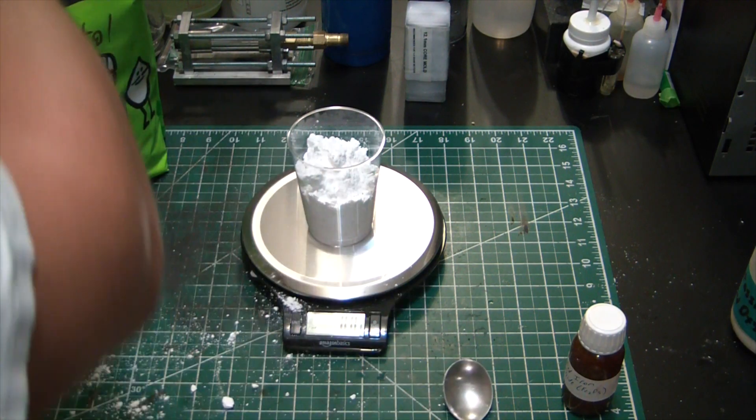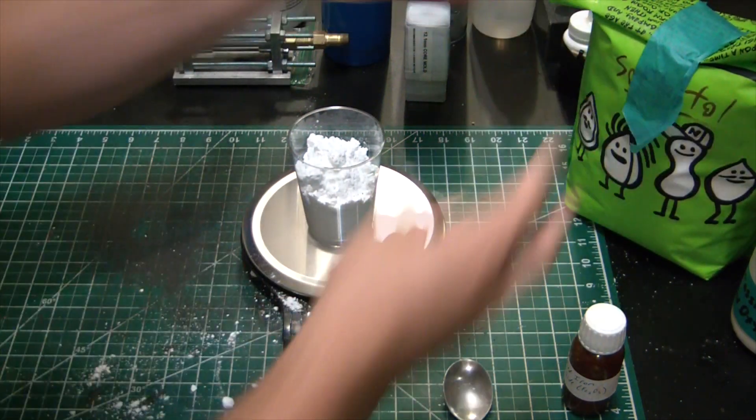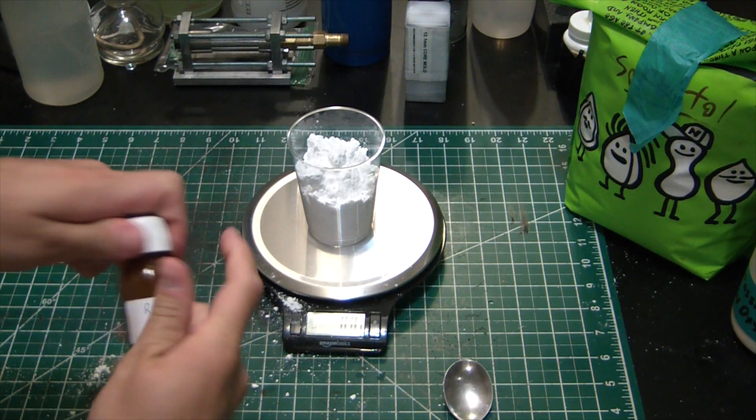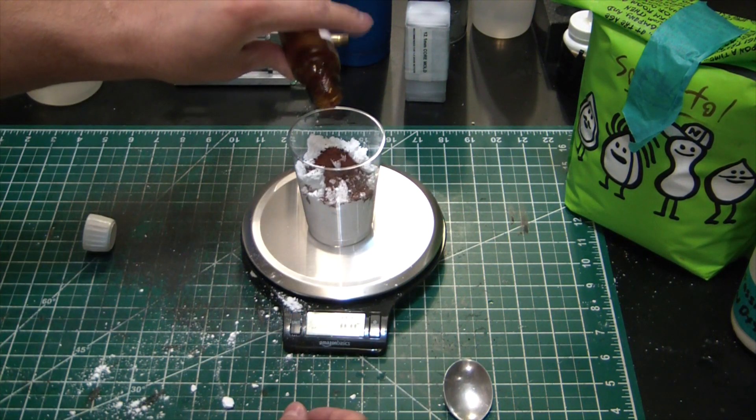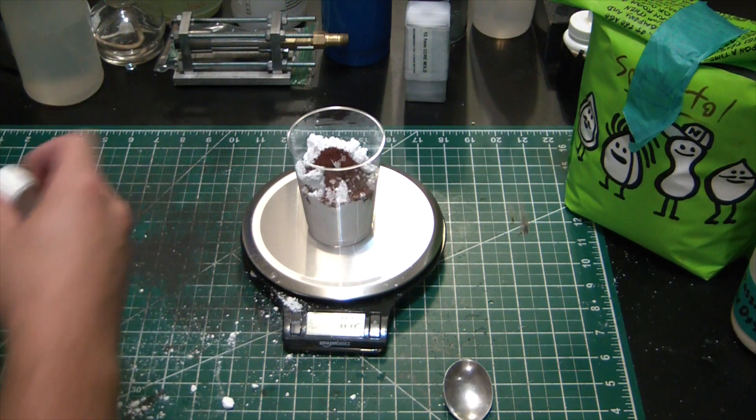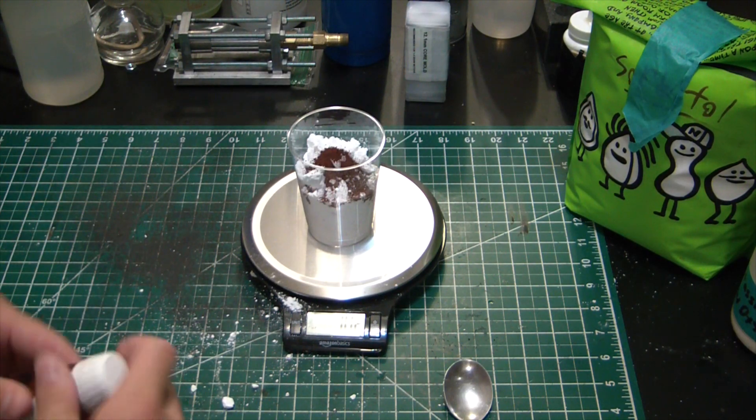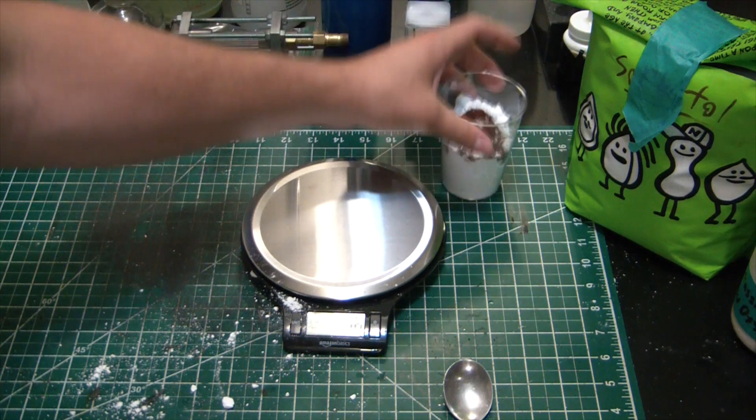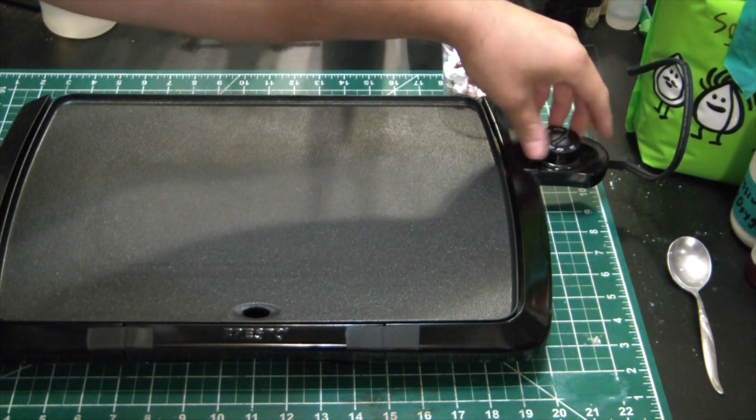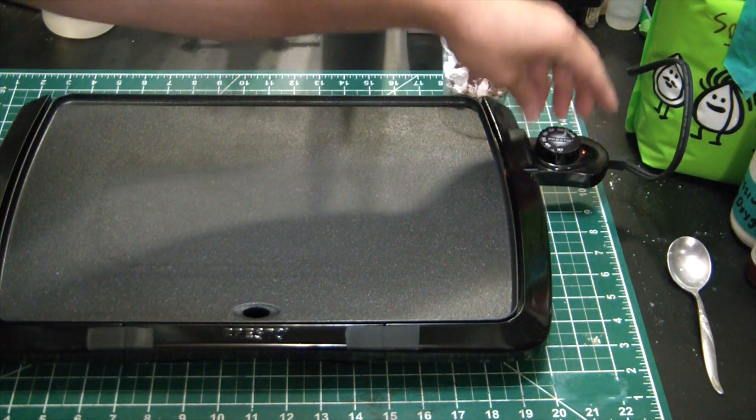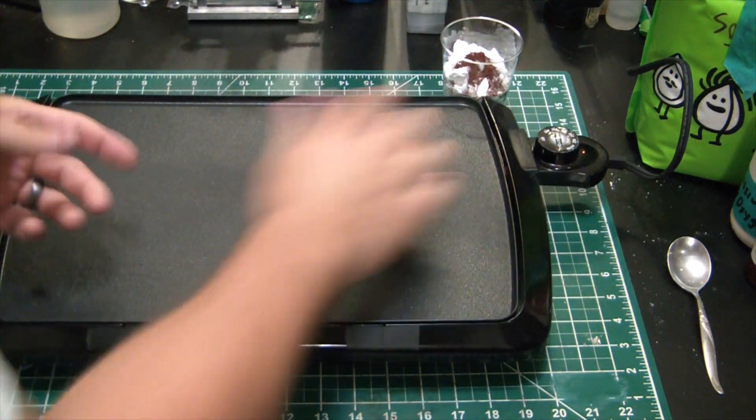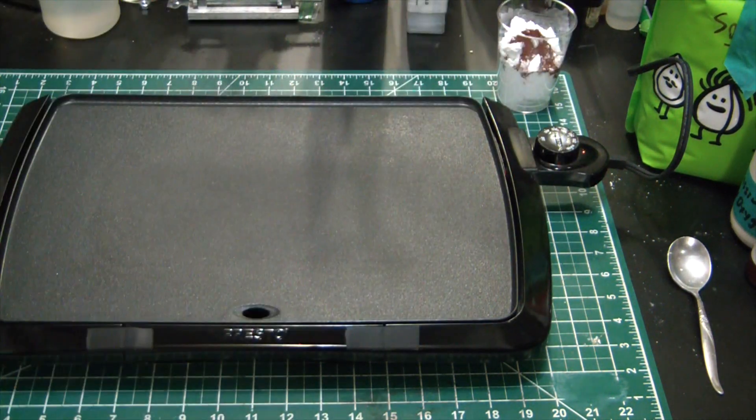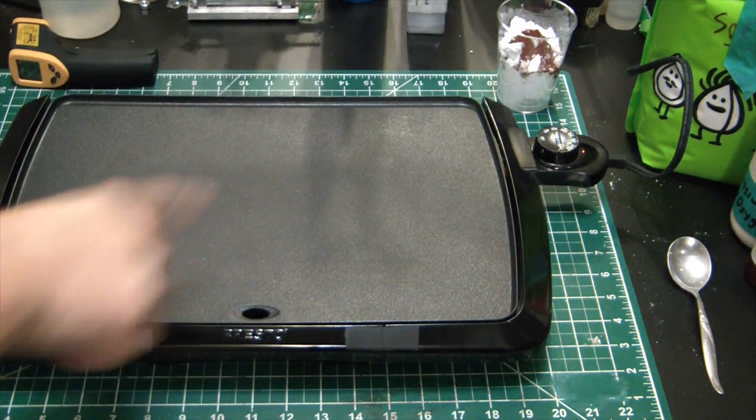Now we'll just add two grams of red iron oxide. This is a burn rate catalyst - rust. Here's our propellant. Got the griddle here, just going to get her up to temperature.